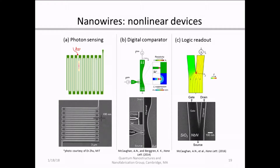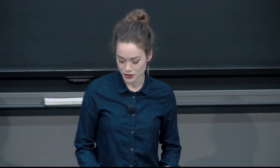Despite these oscillations being slower, nanowires have facilitated numerous types of nonlinear technologies. For instance, they have use in photon sensing as superconducting nanowire single photon detectors, or SNSPDs. They've also found use as digital comparators and logic readout. All of these devices rely on that hotspot formation process to either indicate a detection event or to perform some type of logic operation.